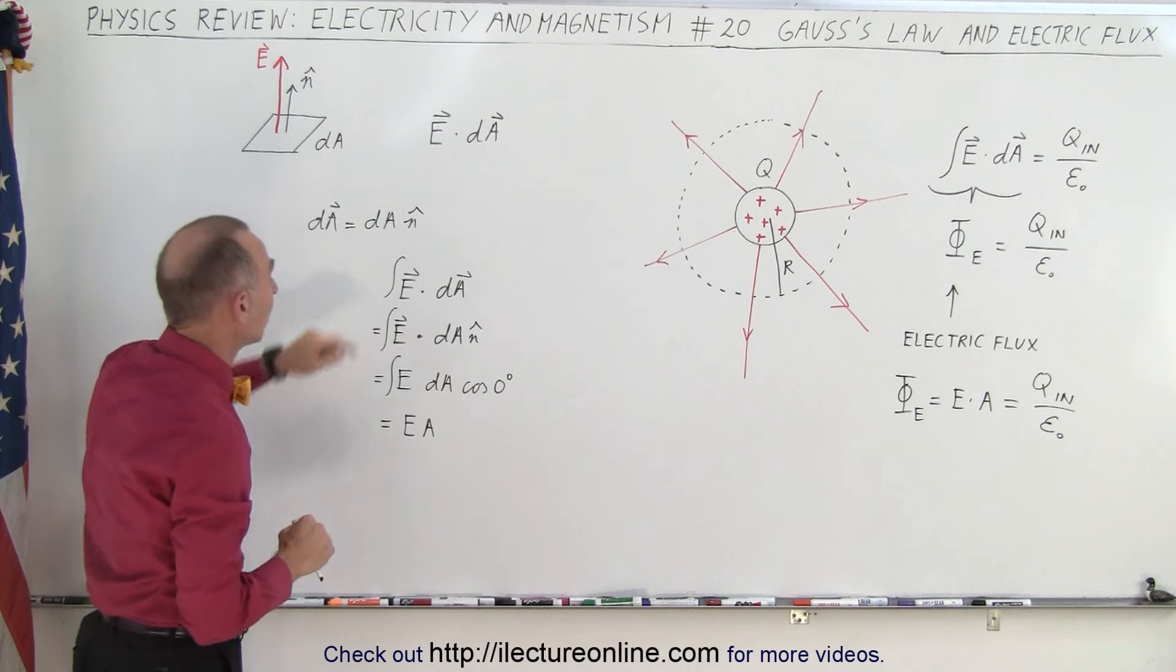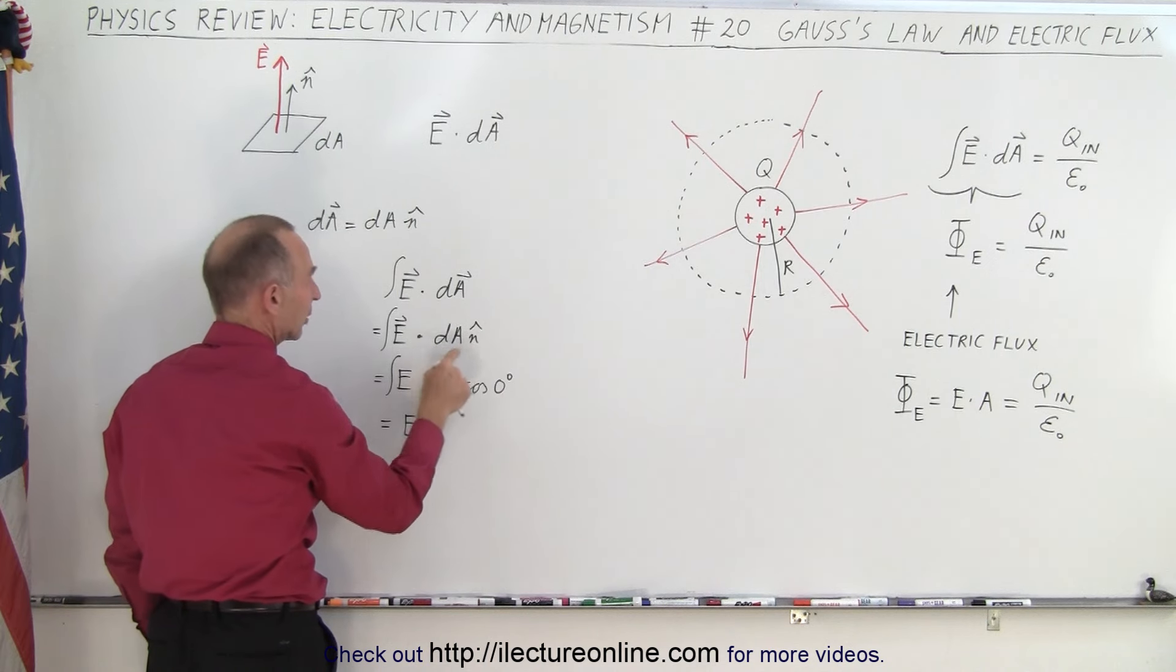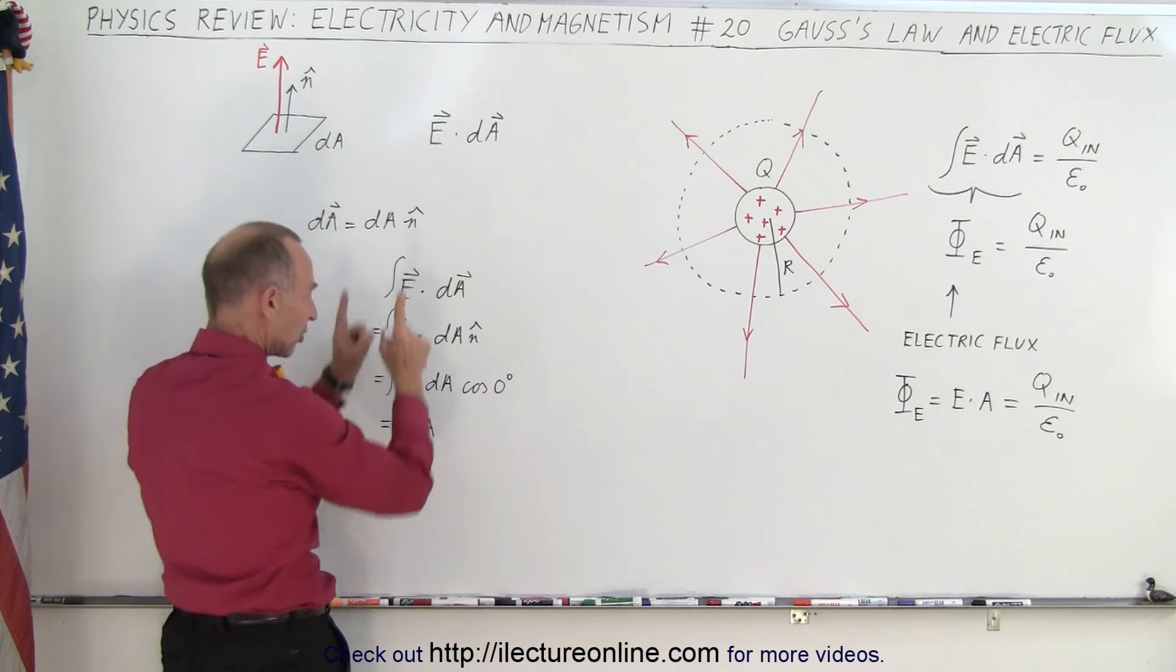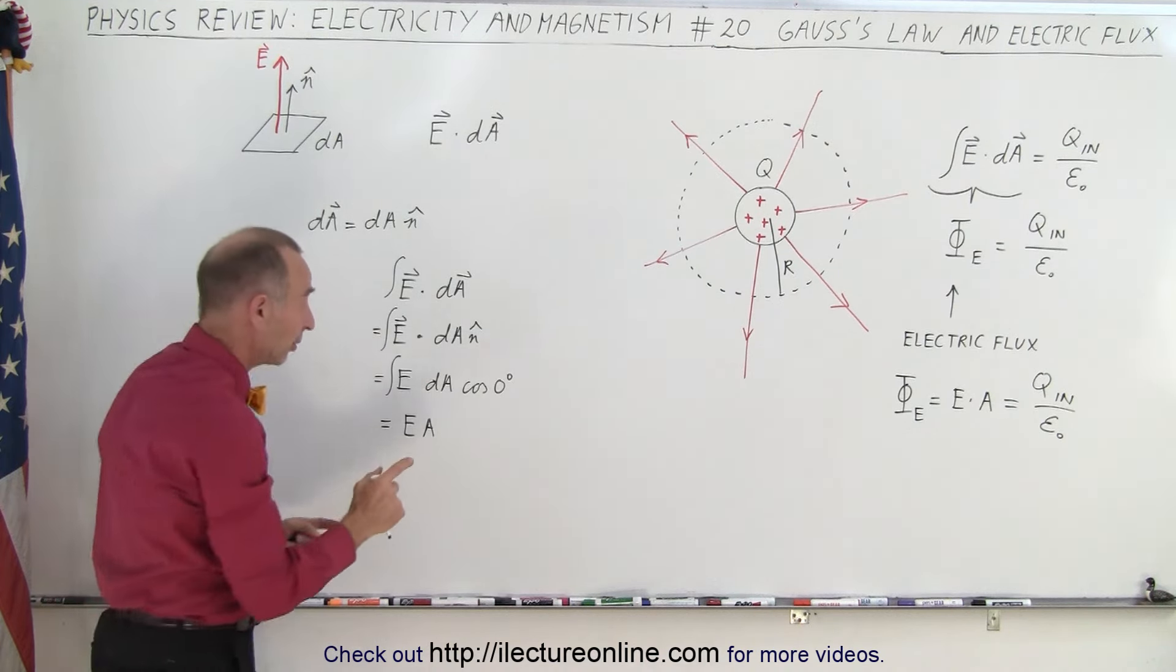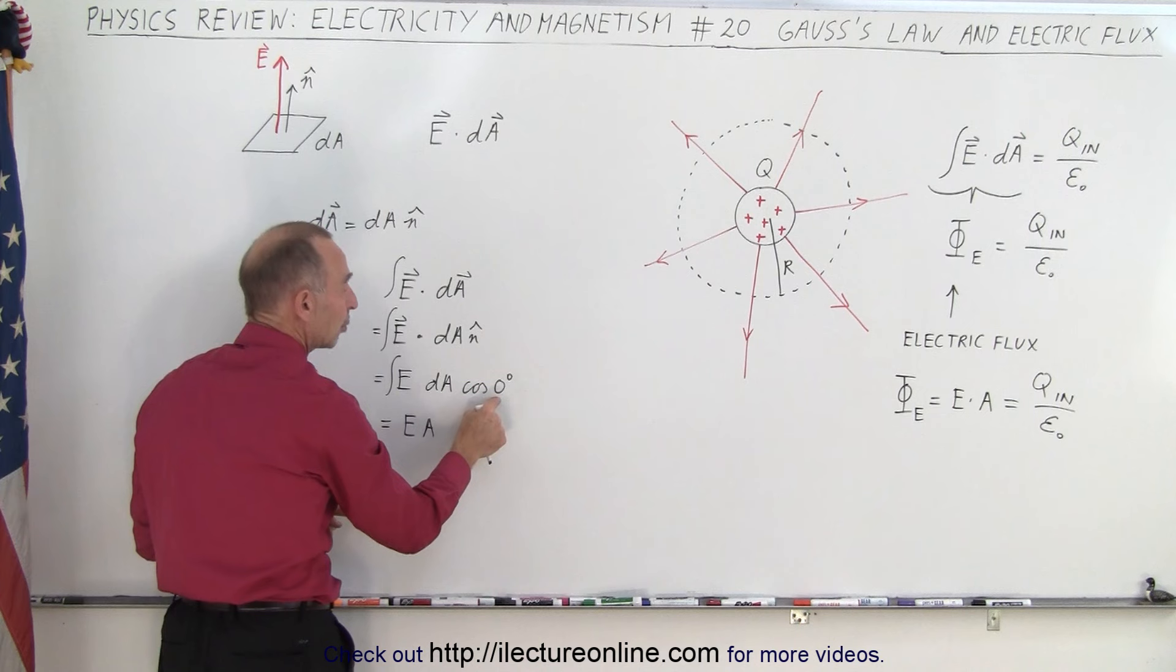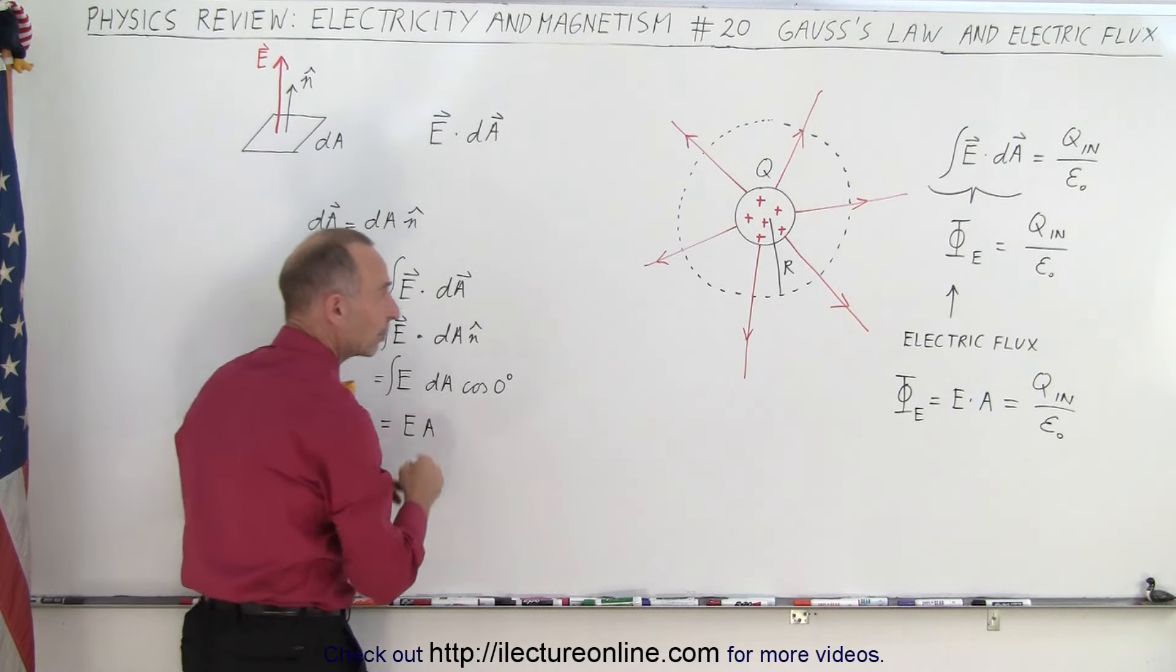This is one and the same. So if you write E dot dA, that is the same as E dot the size of dA times the direction of the unit vector. Now since we're having a dot product between this and this, and since they're pointing in the same direction, the angle between them is zero. We multiply the magnitude of E times the magnitude of dA times the cosine of the angle between them, which is zero degrees, and the cosine of zero is one. This simply becomes E dot dA. We integrate it, we get E times A. So this is where this comes from.